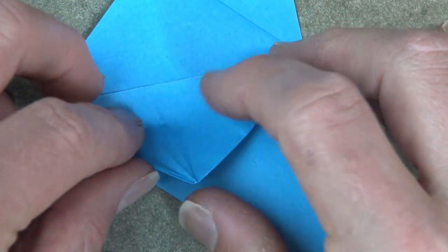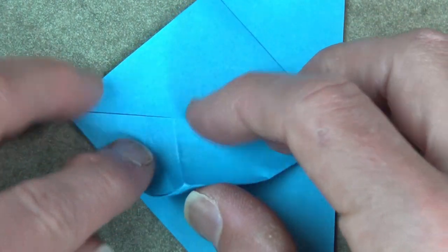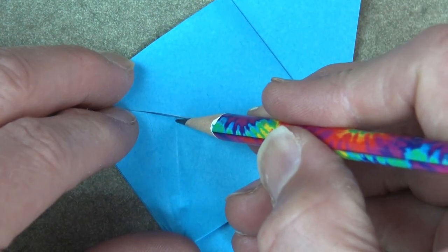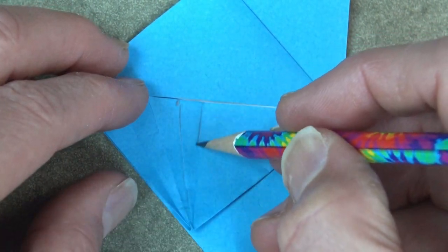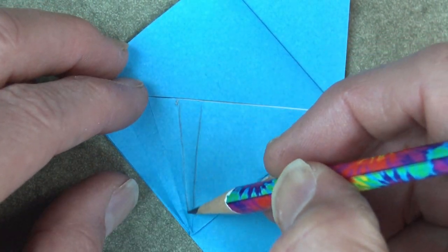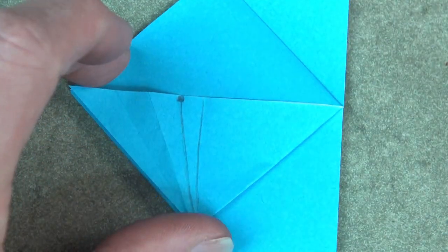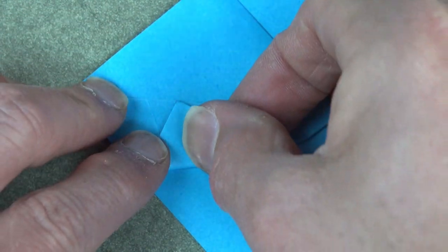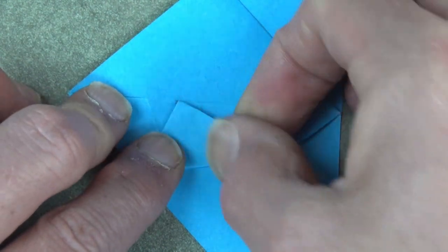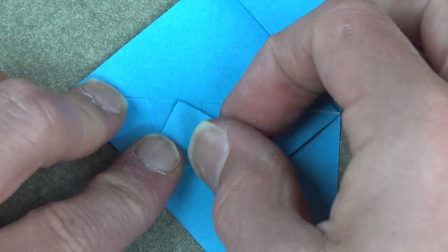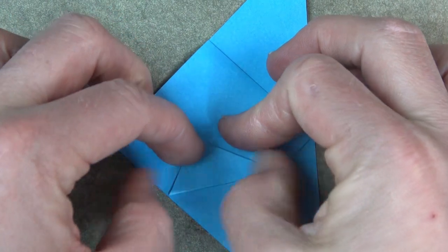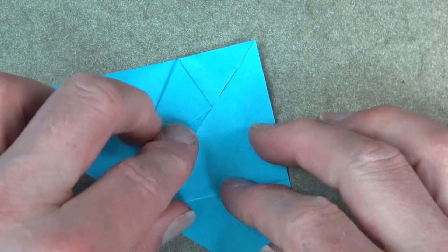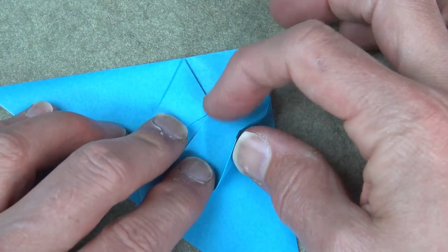Now fold this point, this flap, to this point right here where this crease, not this crease but this crease hits the side. And now fold the other flap to that same point.